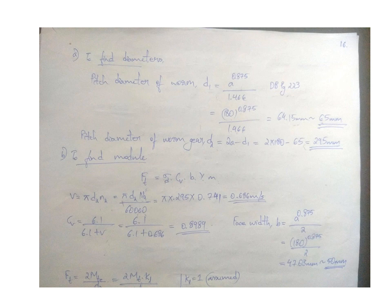For finding the module we have to find other values like Ft equals sigma d times Cv times b times y times m. So for finding this m value, module value, we have to find Ft, sigma d, Cv, b and y. Sigma d is given in the question. We have to find Ft, Cv, b, and y. So for finding Cv we have to find velocity v equals pi d2 n2 by 60000, that is 0.686 meter per second. And Cv will be like 6.1 by 6.1 plus v, so Cv value will be 0.8989.